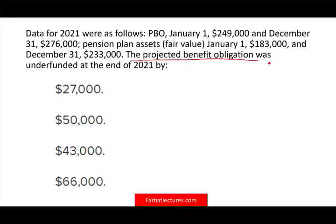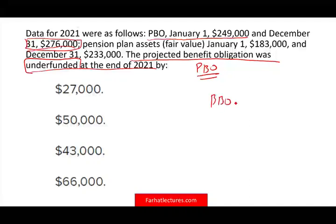The first question asks: what is the projected benefit obligation that was underfunded at the end of 2021? They're asking about the PBO and already telling us it's underfunded. Sometimes a question won't tell you whether it's underfunded or overfunded — they just ask for the PBO. Data for 2021: PBO January 1st was $249,000 and December 31st, 2021 was $276,000. Since we're asked about December 31st, we take the PBO of $276,000.